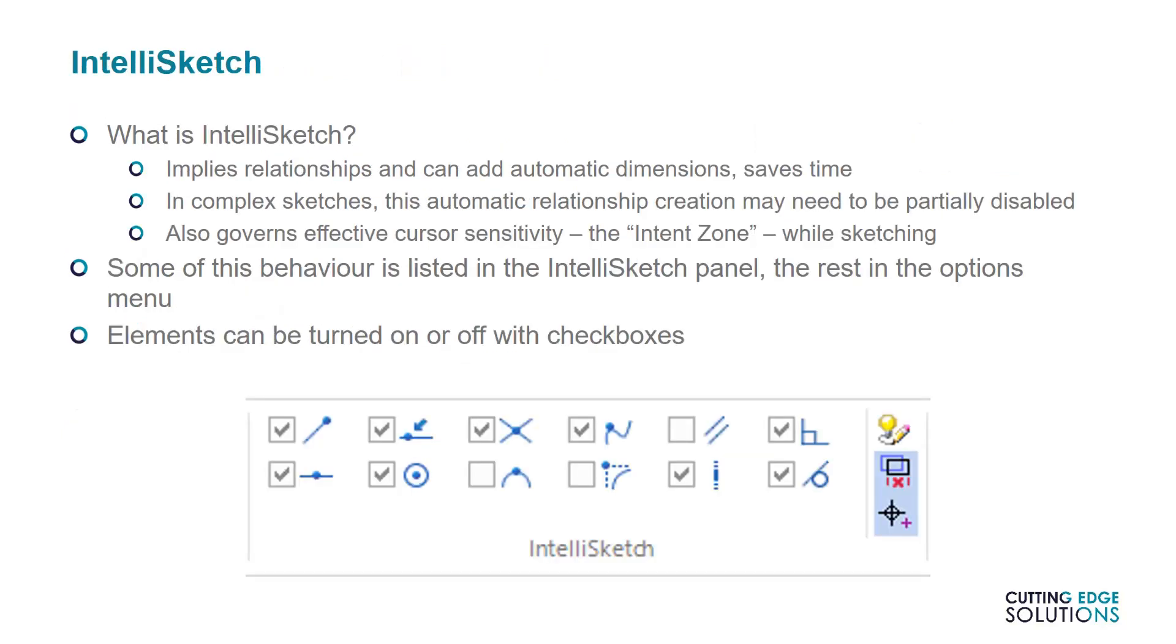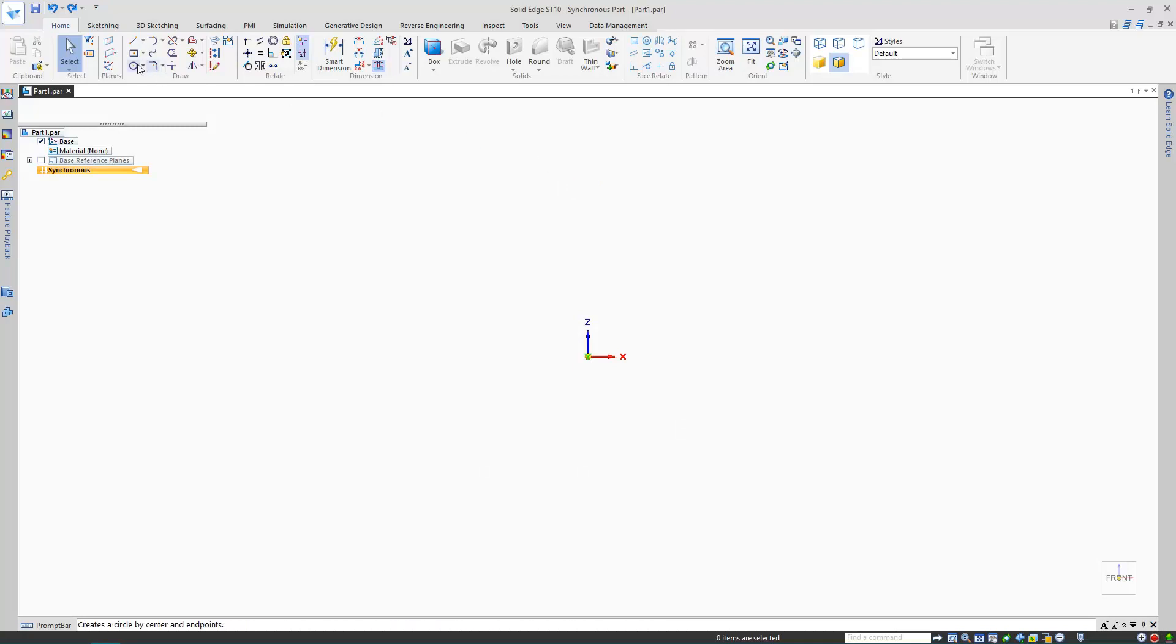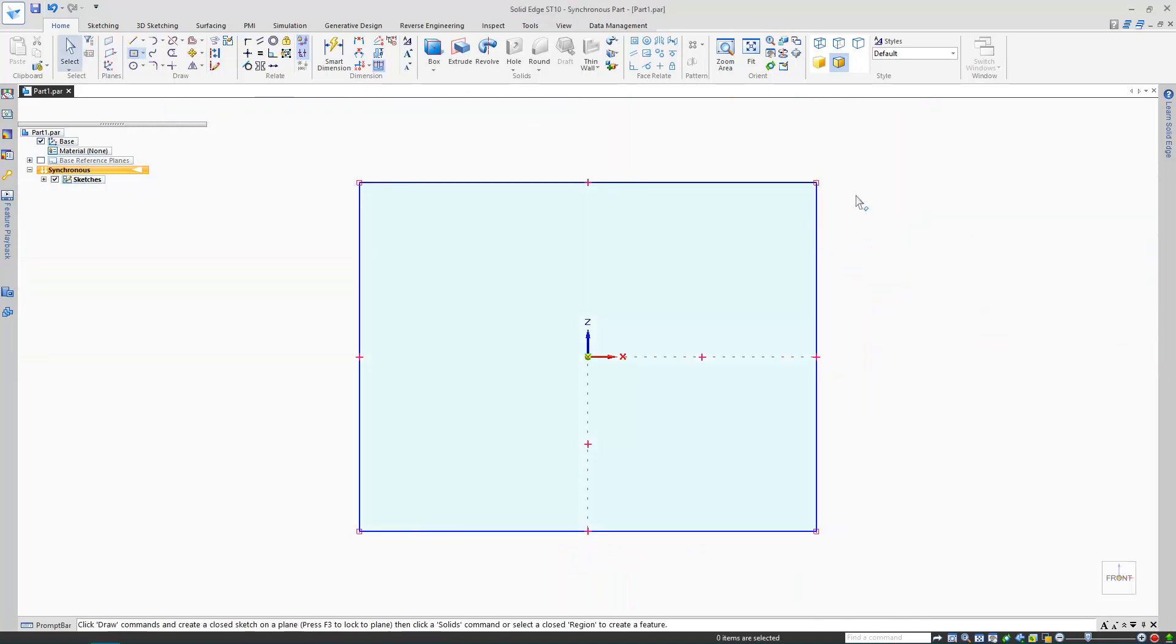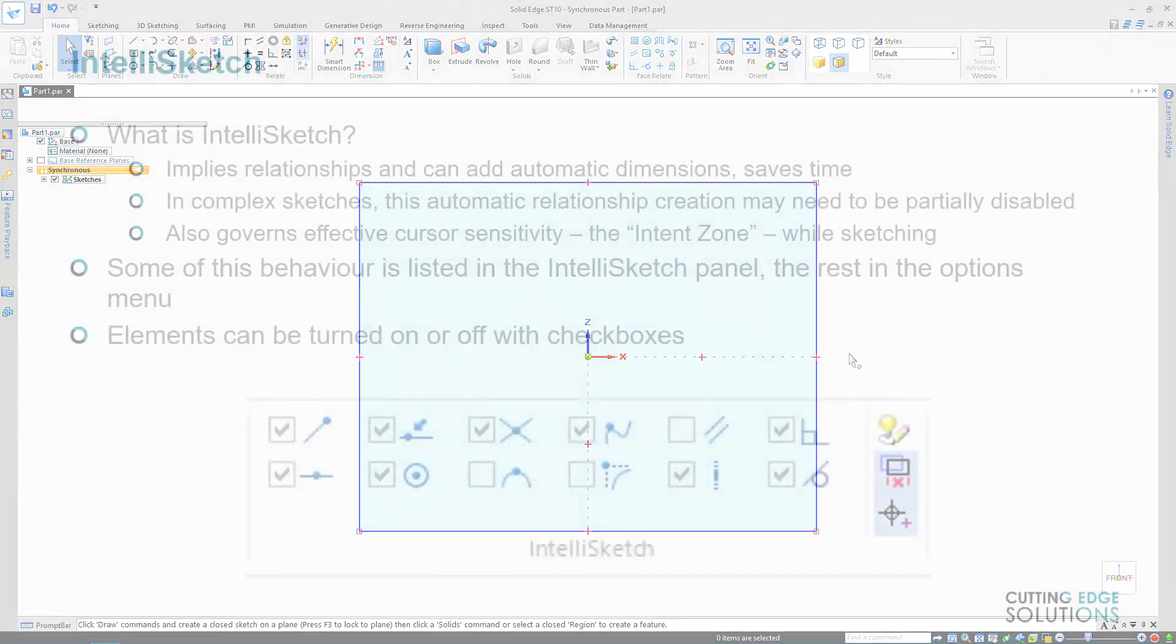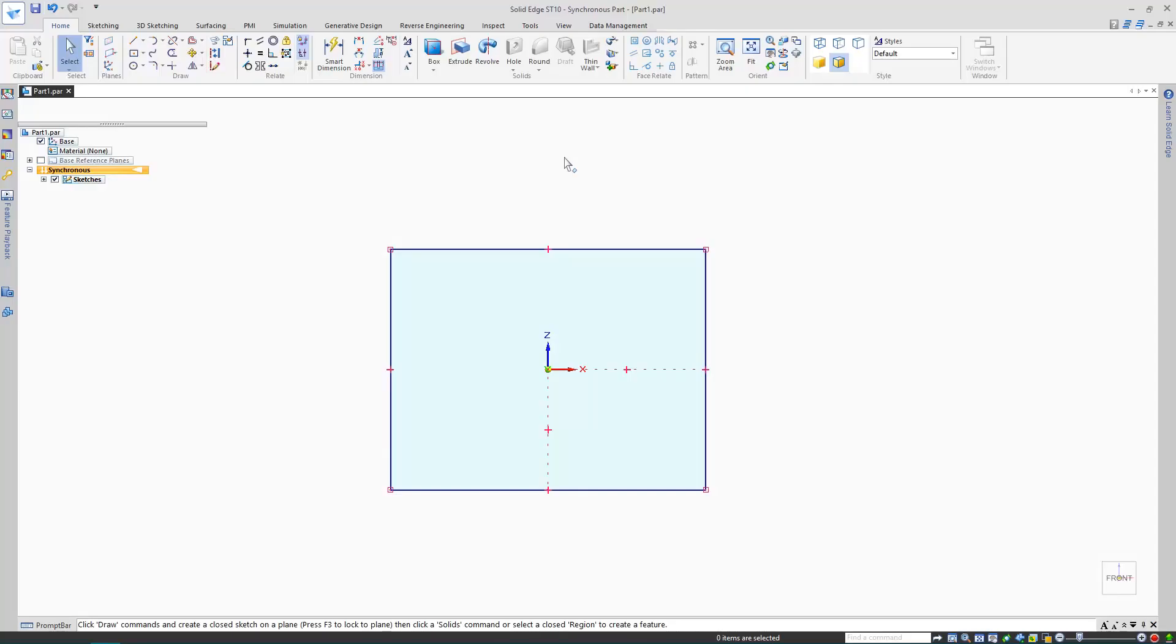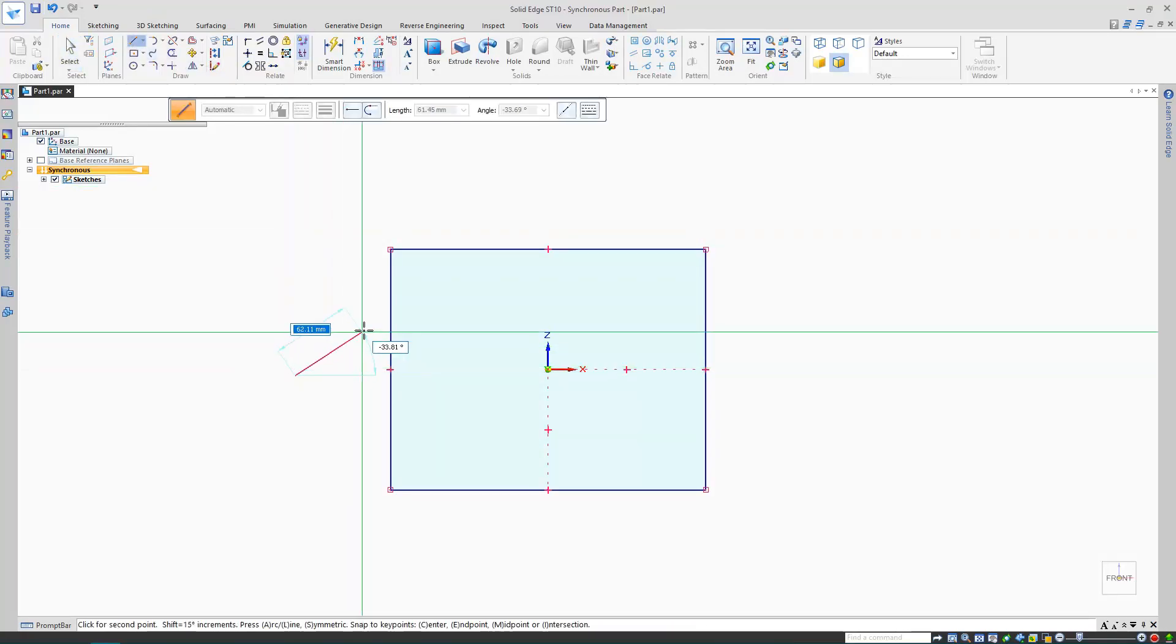IntelliSketch is something that works away in the background while you're sketching. In brief, it applies sketch relationships without the user having to manually specify them, which saves time. For example, a rectangle would logically be placed with its corners connected and made up of vertical and horizontal lines. That logic is all driven by IntelliSketch, which looks for and places all the relationship types checked on in the IntelliSketch section of the sketching command bar. Unticking all of these boxes will prevent the relevant relationships from being auto-generated.